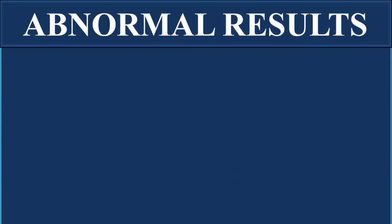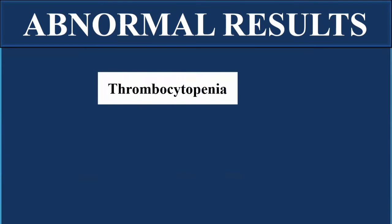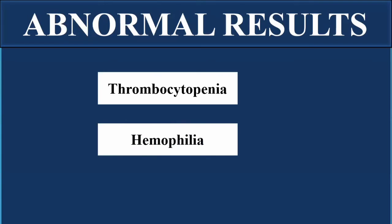Abnormal results may indicate certain diseases, including thrombocytopenia, in which there is a reduced or low level of platelets, leading to increased bleeding and an increased bleeding time. Another abnormal condition is hemophilia, a clotting disorder in which certain clotting factors are lacking, causing the bleeding time to exceed the normal range.